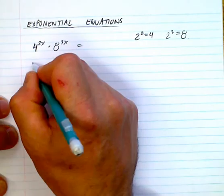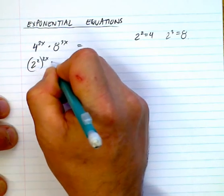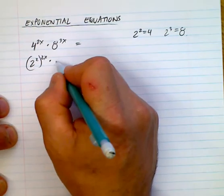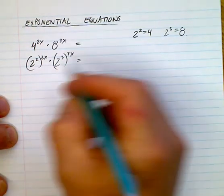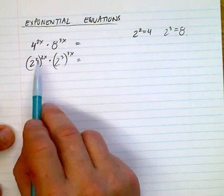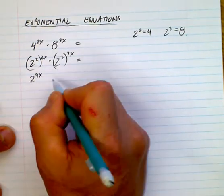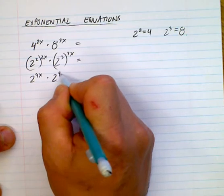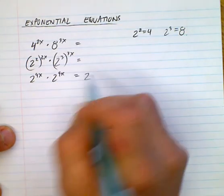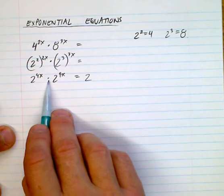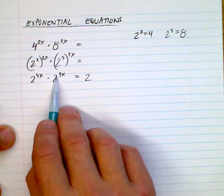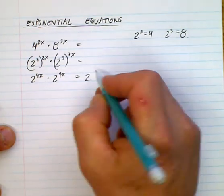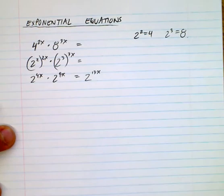So this will be 2 squared, and the exponent is still 2x. And then I have 8 being 2 cubed, still to the 3x. And then we use exponent laws. So power to a power—this is 2 to the power of 4x. This is 2 to the power of 9x. And then we can combine these because they have the same base. Here we multiplied the exponents, the power rule. Here we multiply with the same base, so we add the exponents. So this is 2 to the power of 13x. Okay? So we can simplify it quite a bit, actually.